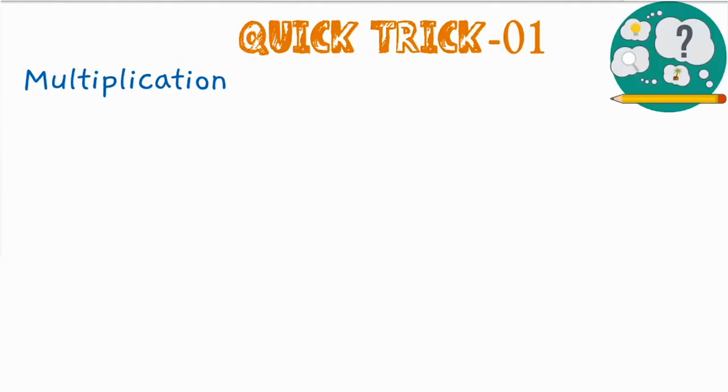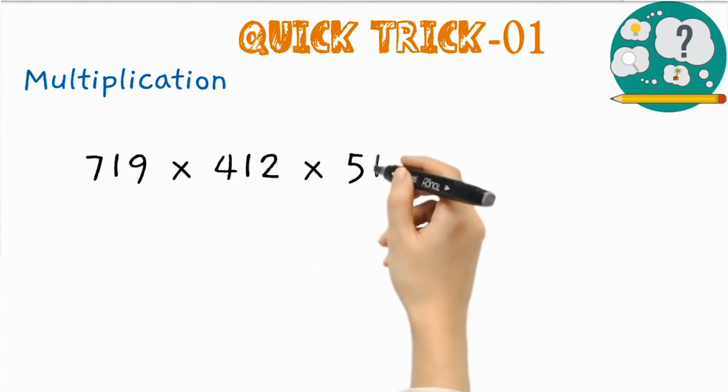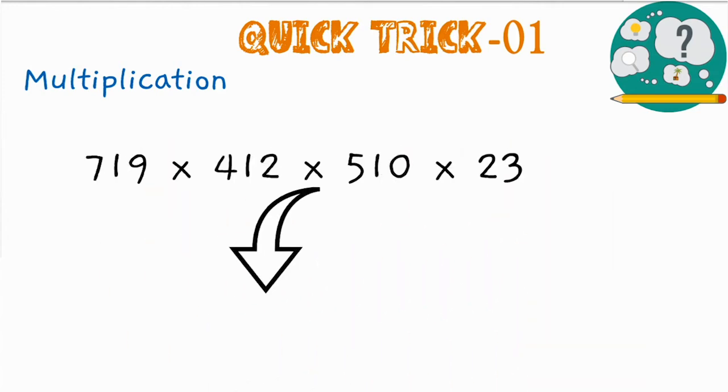Here is a quick trick related to units place value calculation in multiplication. Let me explain this trick with an example. Consider the product of four numbers which are given here. We need the units place value of this product.